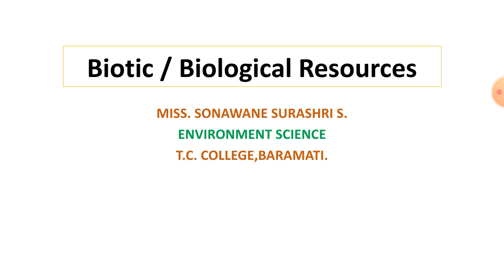Secondly, consumers. There are three types of consumers: primary, secondary, and tertiary consumers. Consumers eat other organisms. Organisms which depend on producers are called primary consumers or herbivores. Primary consumers are eaten by secondary consumers or carnivores, also called primary carnivores. Secondary consumers are eaten by tertiary consumers, also called secondary carnivores.